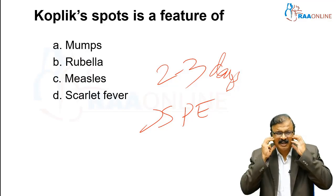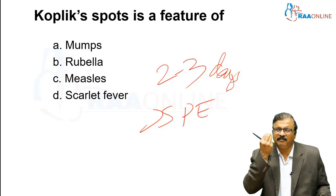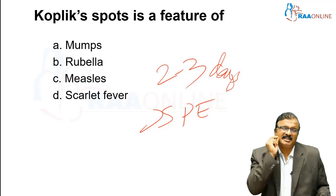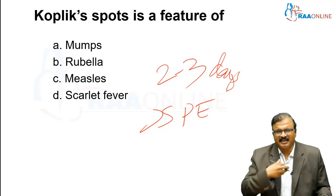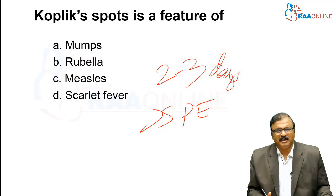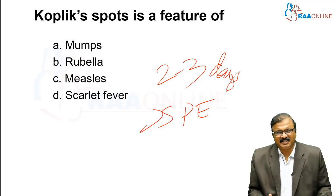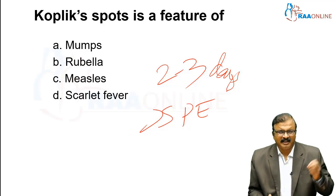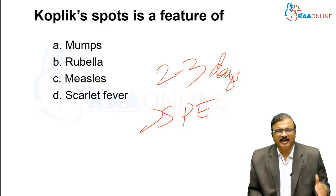Mumps presents with bilateral parotitis, initially unilateral followed by bilateral parotid involvement. You can identify it with parotid duct inflammation, which is seen around the upper second molar teeth. Rubella has a specific exanthem — usually a retroauricular rash and multiple exanthem over the trunk. Scarlet fever has different presentations with erythema and pharyngitis, one of the minor criteria for acute rheumatic fever diagnosis.